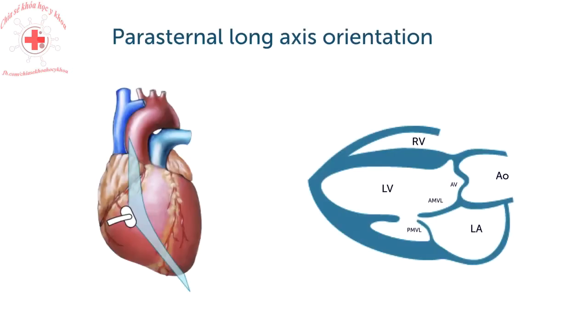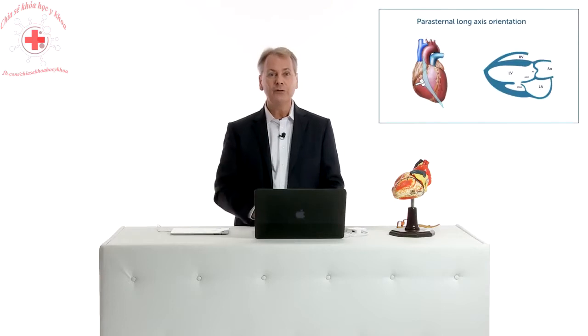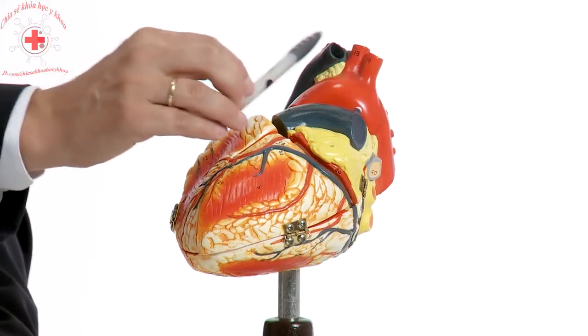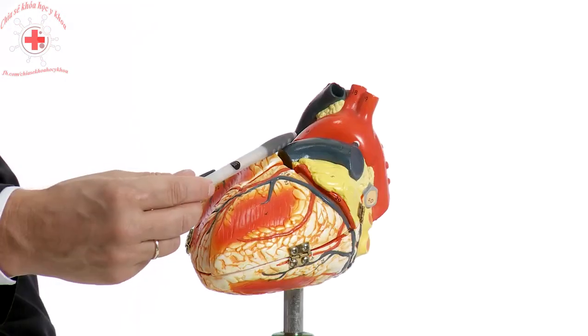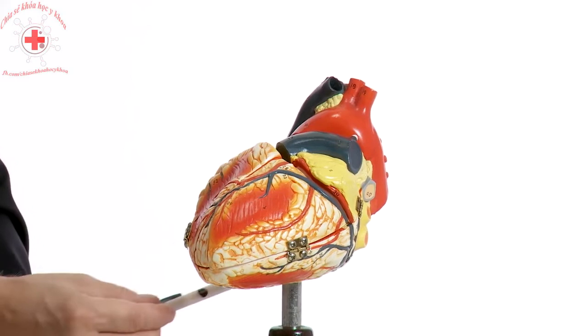Now let's take a look at the first view, the so-called parasternal long axis orientation. This is a view where you have a longitudinal view of the heart. Here you would image the heart in a way where you would transverse both the basal portions, the cranial portion of the heart, the ventricles, and also behind the atria. In the following demonstration you're going to see which structures we see and how we can actually acquire such a view.